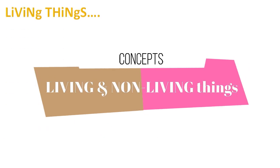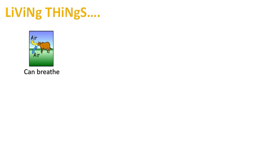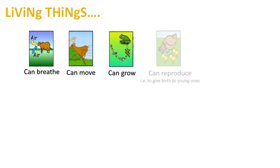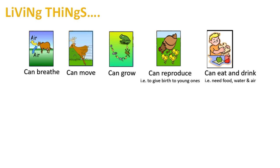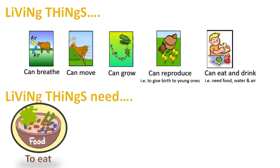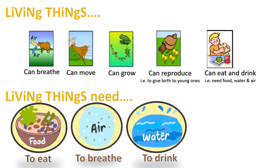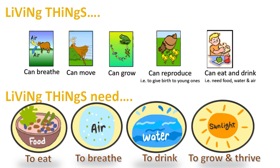Let's go to our first concept — living things. Living things are those that can breathe, can move on their own, can grow or change, can reproduce — that is, give birth to young ones — and can eat and drink. Living things need food to eat, air to breathe, water to drink, and sunlight to grow and thrive. These are essential for living things to have a life.